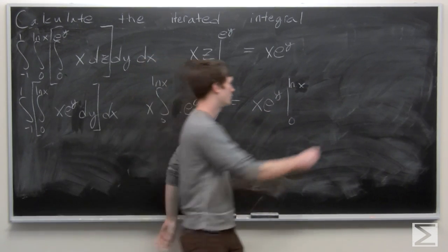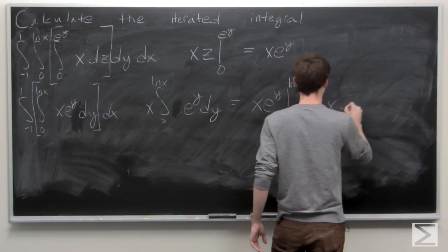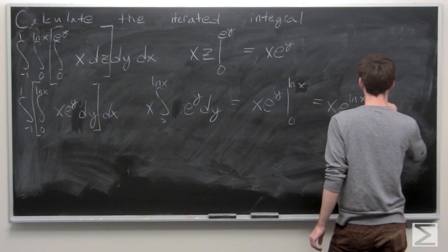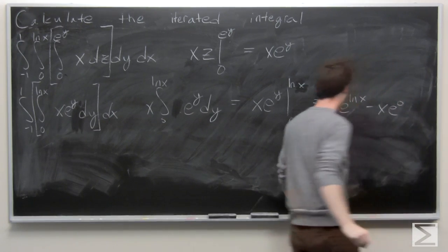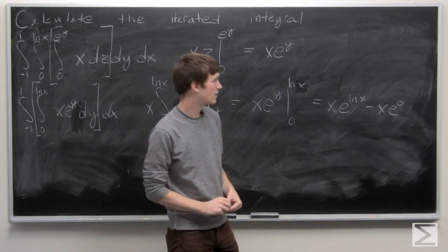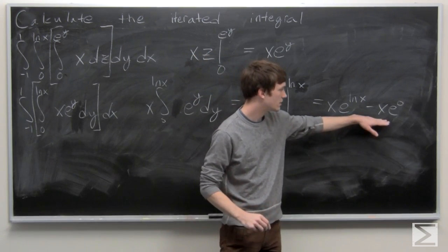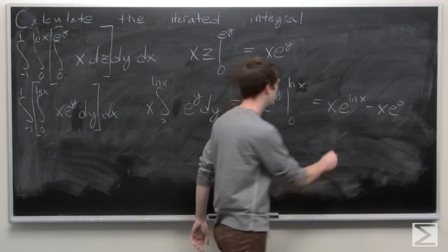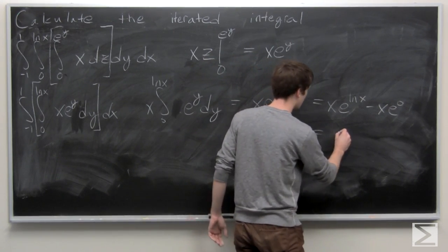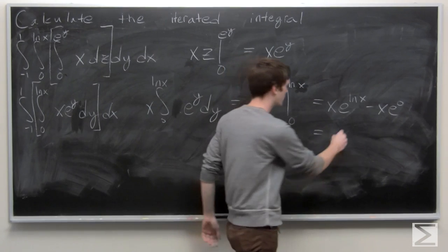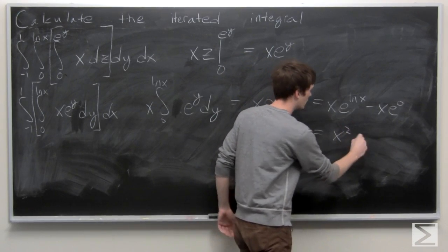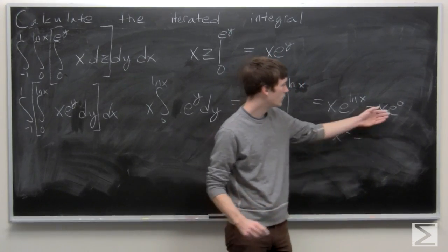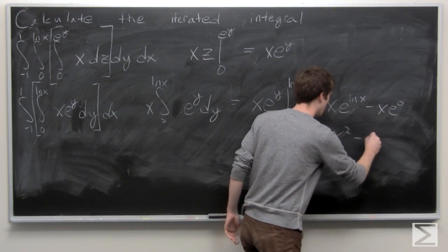Evaluating from 0 to ln x, we get x times e to the ln x, minus x times e to the 0. Since e to the natural log of x equals x, we have x squared minus x times 1, which gives us x squared minus x.